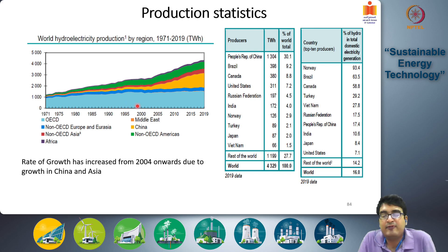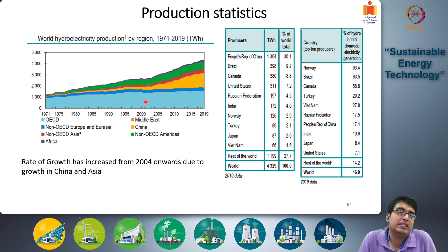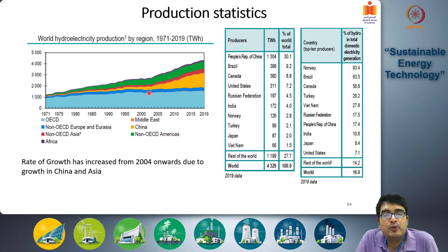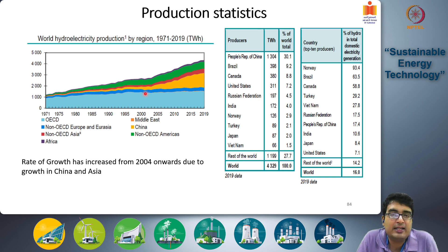The blue represents the developed OECD countries, which includes Europe, USA, Japan, South Korea, and the developed world. The dark blue region is non-OECD Europe and Eurasia — the countries of the erstwhile Soviet Union, Russia, Ukraine, and the rest of the Russian Federation. The yellow is China.